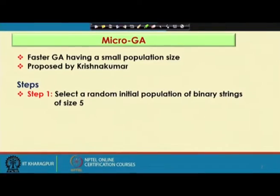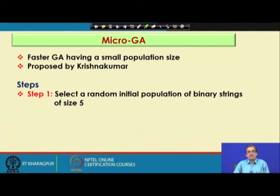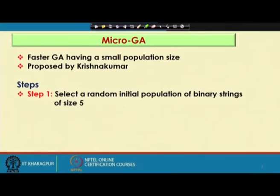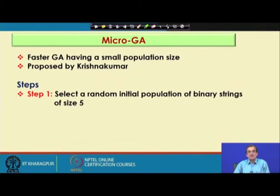Micro GA is actually a result of that type of thinking. This is a faster GA, and here we start with a small population size. Generally, we consider the population size to be equal to an odd number — typically N equals 5, 7, and so on. This concept of micro GA was proposed by Krishna Kumar, and after that it became very popular, particularly for problems where we want to find out the optimal solution within a fraction of seconds.